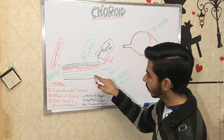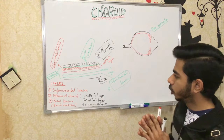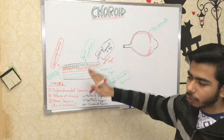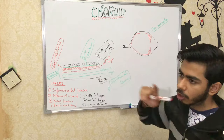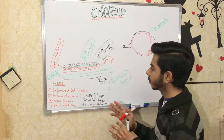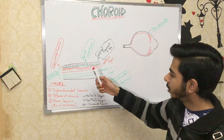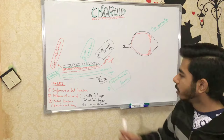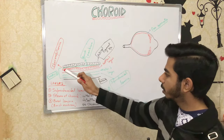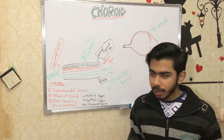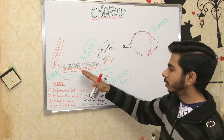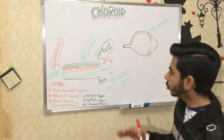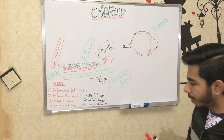From the supra choroidal space, arteries go inside towards the outer side of the retina. In Haller's layer the large-sized blood vessels are present; they divide into smaller vessels in Sattler's layer, then continue into the choriocapillaries. The leaky choriocapillaries provide nutrition to the outer retina. Bruch's membrane sits between the retinal pigment epithelium and the choriocapillaries, facilitating nutrition transfer. Now let's talk about blood supply to the choroid.